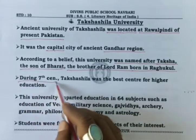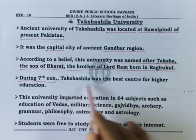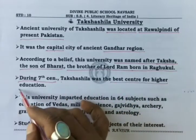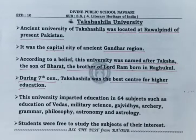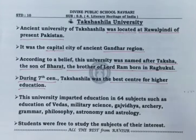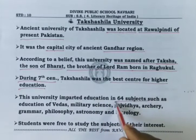During the 7th century, Takshashila was the best center for higher education. For college-level education, Takshashila was considered the best center. This university imparted education in 64 subjects.